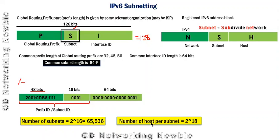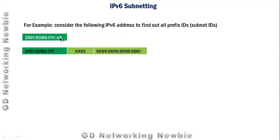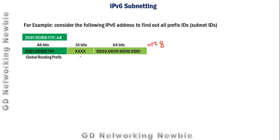Let us solve an example. Consider the following IPv6 global routing prefix with a prefix length of 48. The interface ID is generally 64 bits long. Using 64 minus 48, we get 16 bits in the subnet field. Adding them up: 48 bits plus 16 bits plus 64 bits equals 128 bits total, which confirms our calculation.